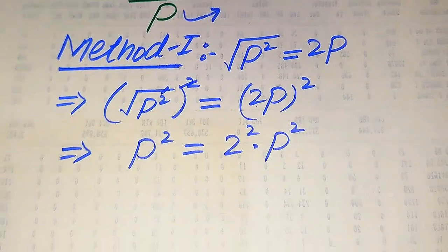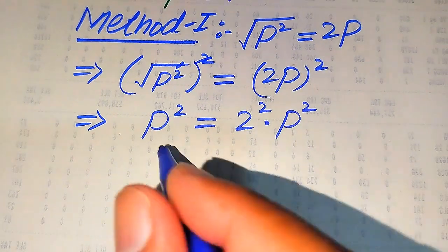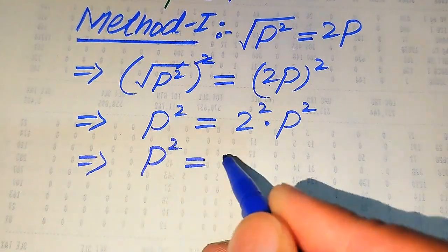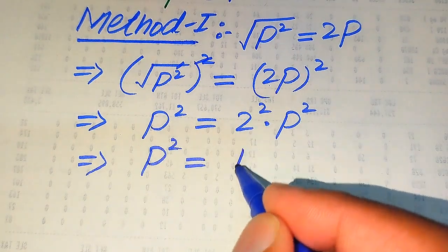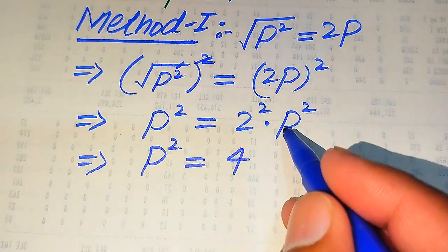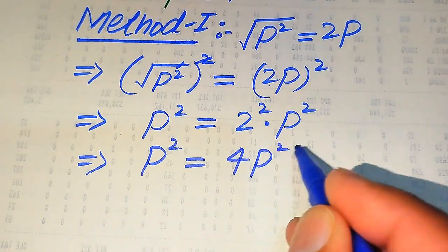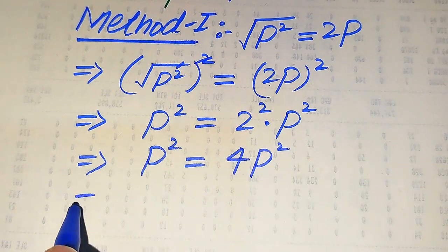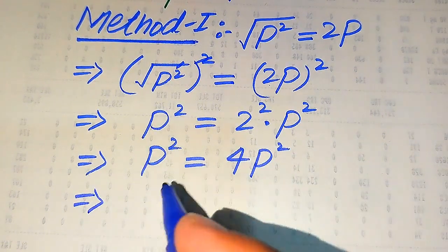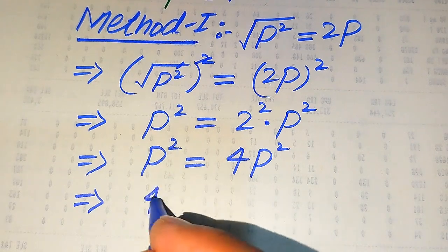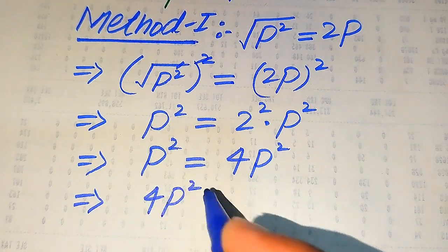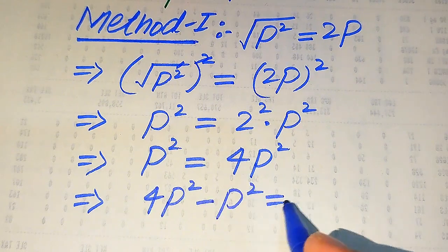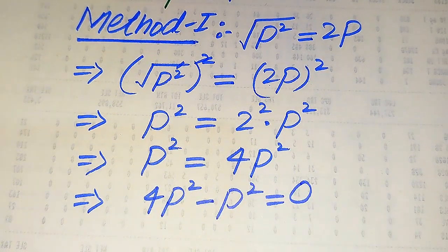So on the left-hand side we have p², and on the right-hand side we have 2² which equals 4, times p². In the next step, we move p² to the right-hand side — since it is positive on the left, it becomes negative p² on the right — and the whole equation equals 0.